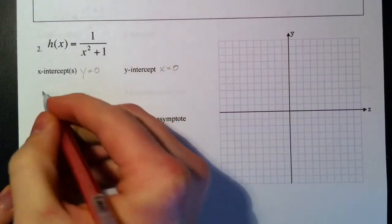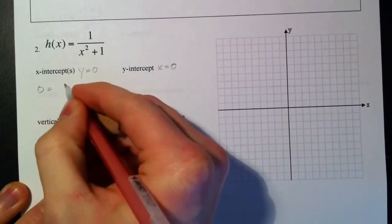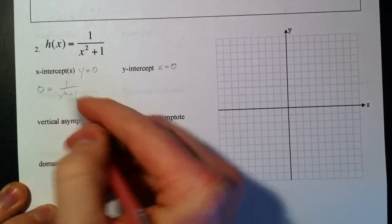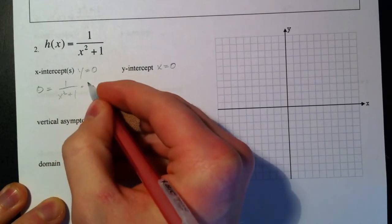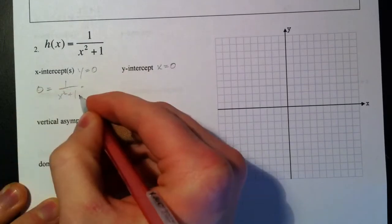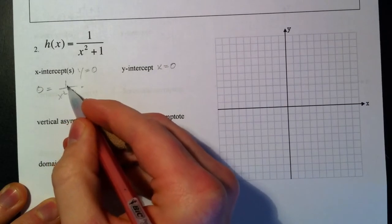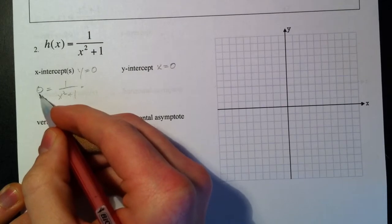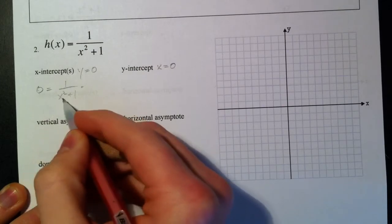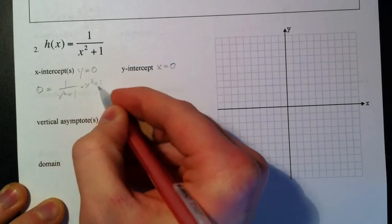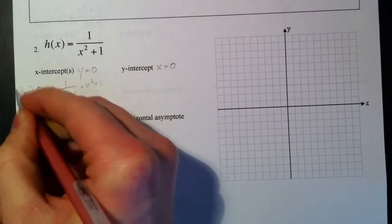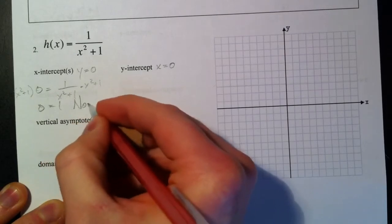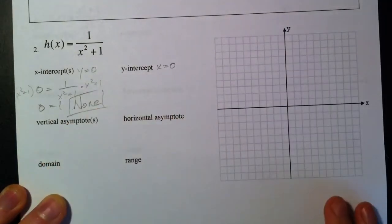So 0 equals 1 over x squared plus 1. We multiply both sides by the x squared plus 1, or you ask yourself logically, 1 divided by anything will never get me 0. 0 times this x squared plus 1 is going to be 0 equals 1. So the answer is 0 doesn't equal 1, so it's never going to cross the x-axis.